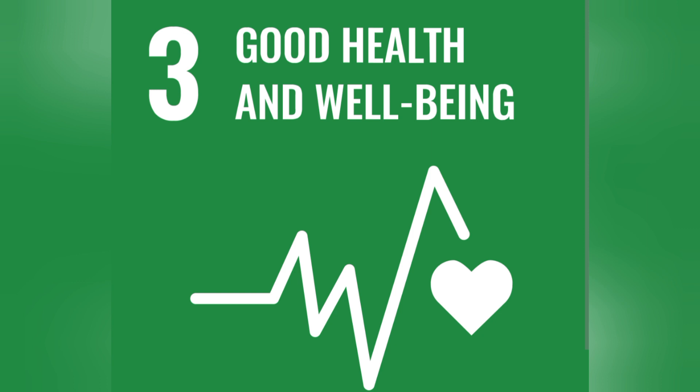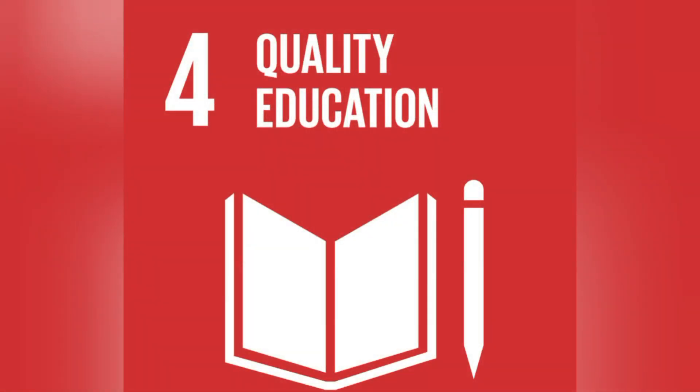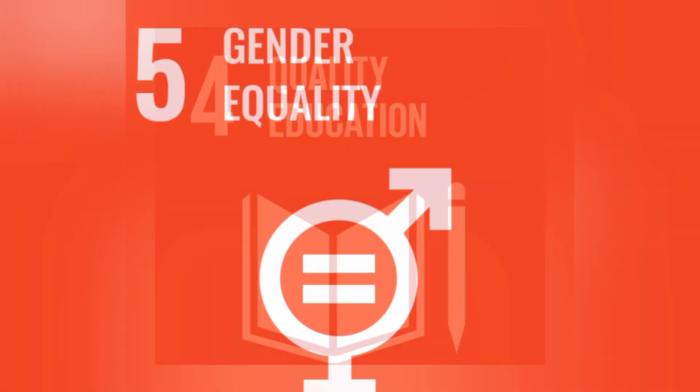Goal number four, quality education. Outcome target: elimination of all discrimination in education, universal literacy, numeracy and education for sustainable development. Implementation target: expand higher education scholarships for developing countries and increase the supply of qualified teachers in developing countries.